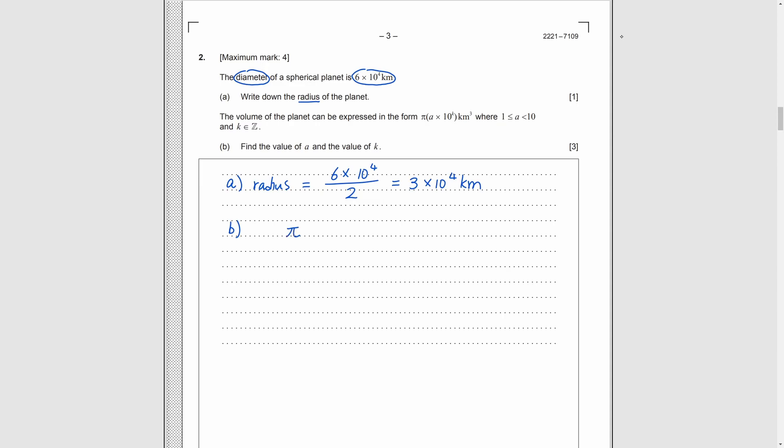By the formula of sphere volume, we set 4 over 3 pi r cubed equal to this. And then substitute r into it. We can cancel the pi on both sides, do some cancellation, and change the left-hand side into standard form. Finally, we compare the form on both sides and we get the final answers.